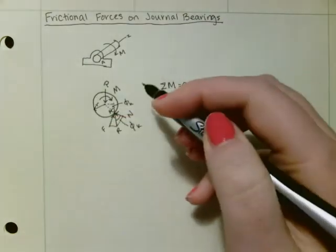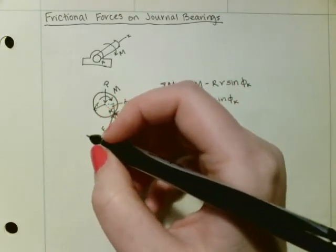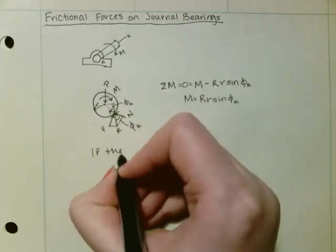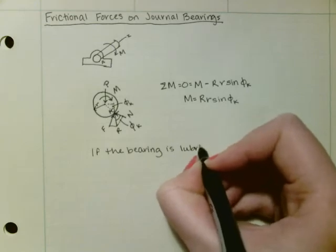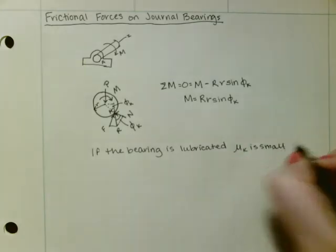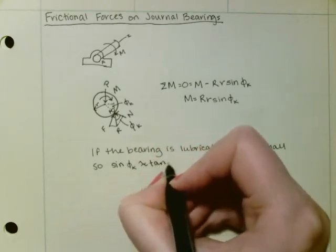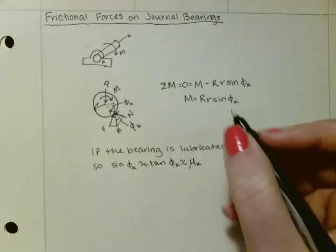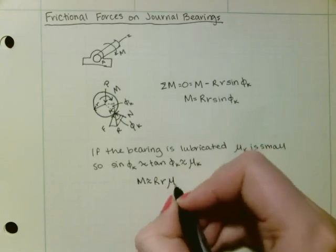Phi_k applies because the bearing is moving. If the bearing is lubricated, mu_k is small, so sine of phi_k is approximately equal to the tangent of phi_k, which is approximately equal to mu_k. Such that M is approximately equal to R times R times mu_k.